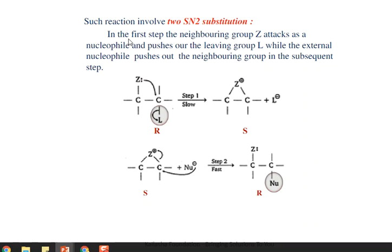Such a reaction involves two SN2 substitutions. In the first step, the neighboring group Z attacks as a nucleophile and pushes out the leaving group L, forming an intermediate. In the second step, the external nucleophile attacks quickly and pushes out Z from the back side. The final product shows the same configuration as the reactant — the nucleophile and leaving group are on the same side — so retention of configuration is observed.